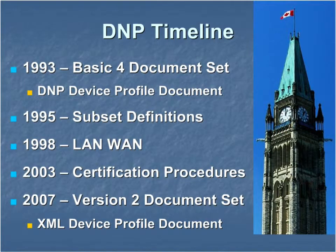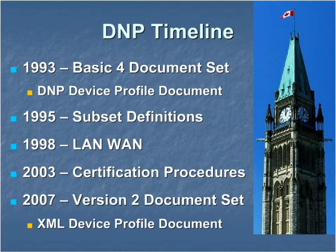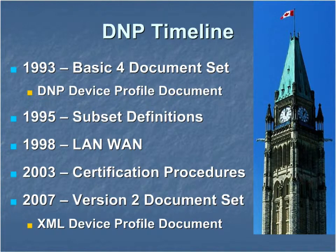The device profile document was introduced in the original Basic 4 specification. Over the next several years, the Tech Committee worked on subset definitions, the land-land specs, certification procedures, and various other technical bulletins. In 2007, these were all rolled into the Version 2 document set. This set expanded the number of parameters in the original device profile document and defined an XML schema for a machine-readable version of the device profile.